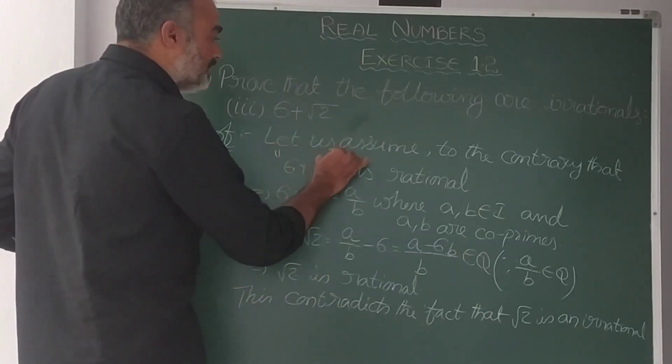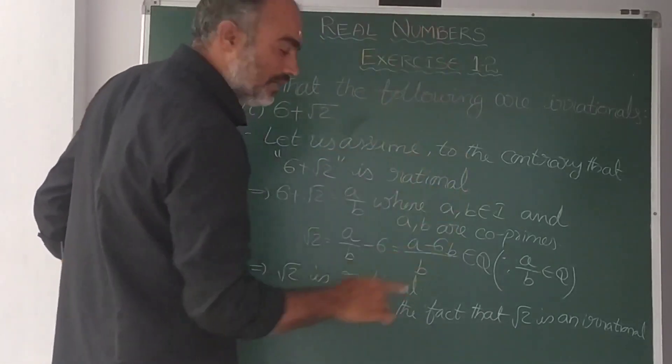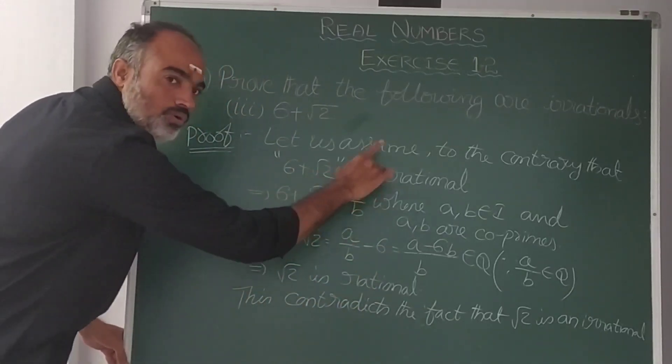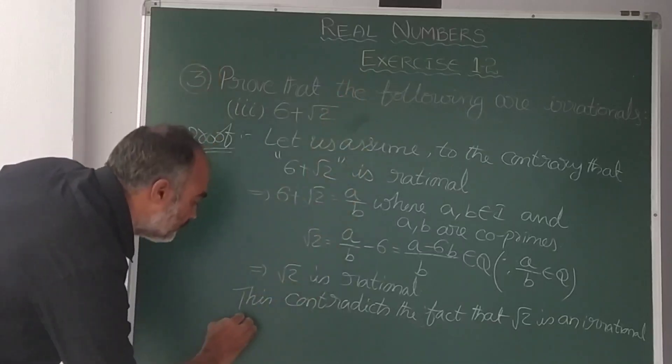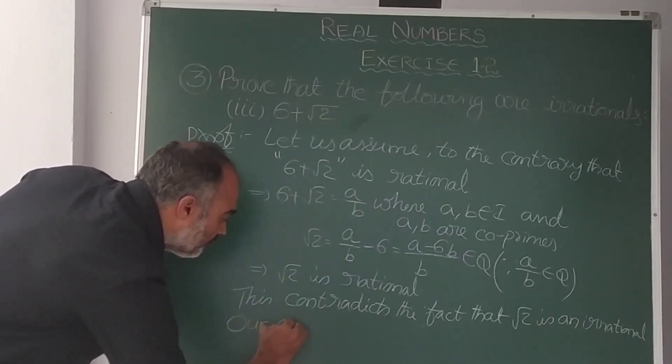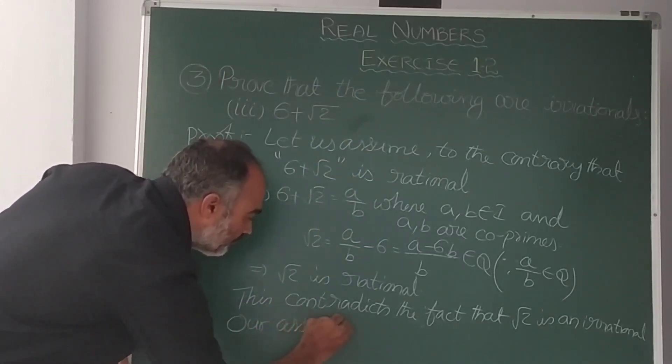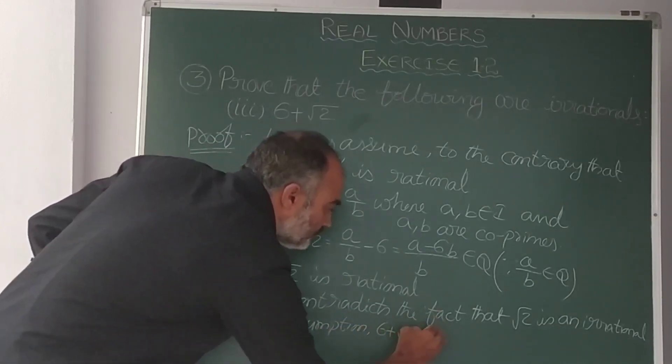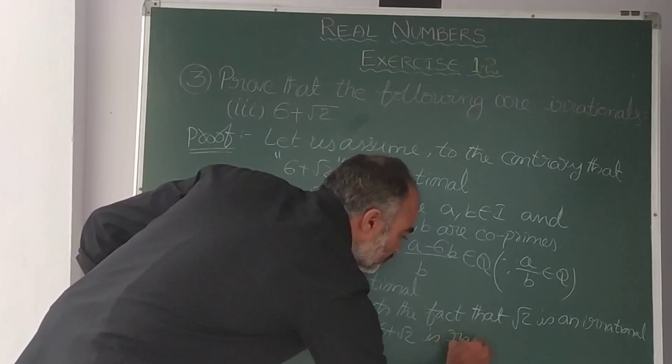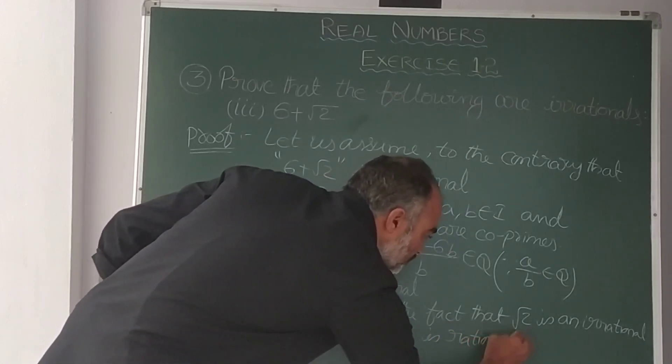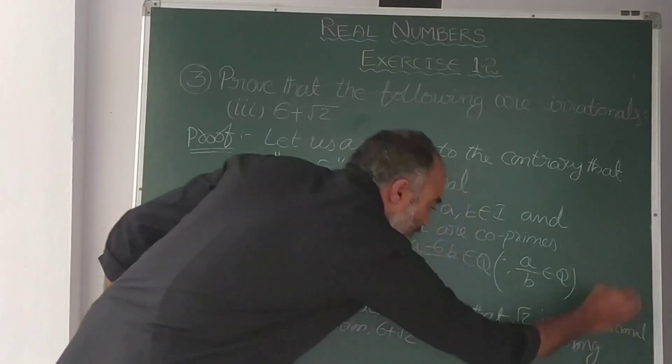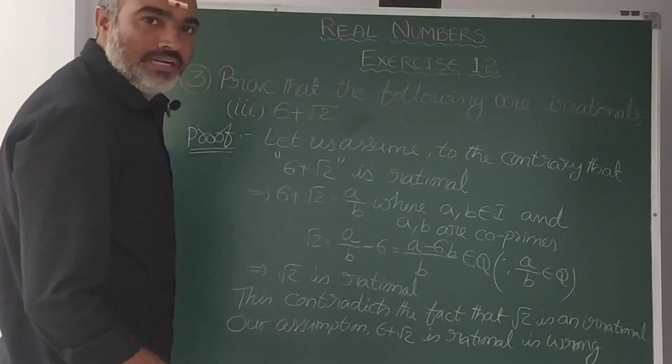What is the mistake? 6 plus root 2 is irrational. That is wrong. Our assumption, 6 plus root 2 is rational is wrong. When 6 plus root 2 is rational is wrong, what is the correct answer?